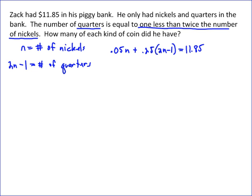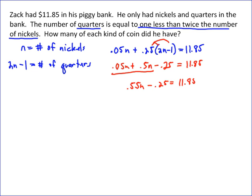Now we just go through and solve it. Start by doing the distributive property. 0.25 times two gives you 0.5n, and 0.25 times one gives you 0.25. We add like terms to get 0.55n minus 0.25, which equals 11.85. We add 0.25 to both sides and get 0.55n equals $12.10. To solve this, we divide $12.10 by 0.55, which gives you 22.